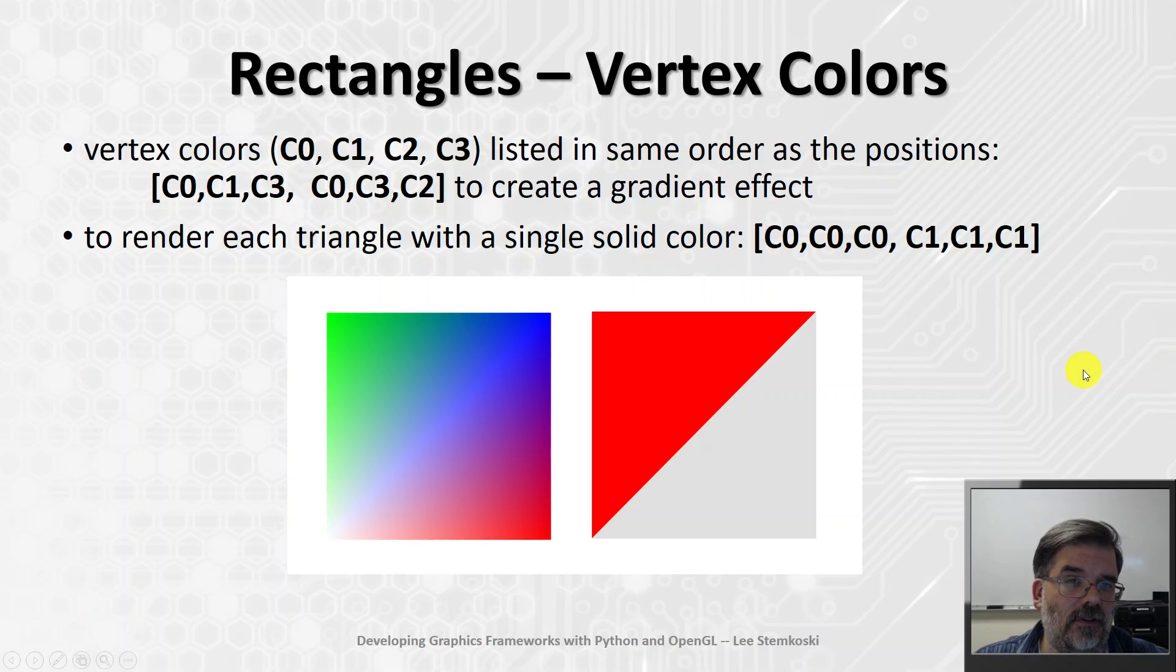Now, the other thing we need to do is establish vertex colors so we can really see it. I guess that's not as important for a two-dimensional rectangle, but let's get in the habit right now. So the colors of these vertices, we'll store those with the variables C0, C1, C2, C3, so it's easy to change them later. And I'll use the colors white, red, green, and blue. And when listing these vertex colors, I'm going to want to put them in the same order. C0, C1, C3, and C0, C3, C2. I want to order them in the same way as we've ordered the positions of the vertices.